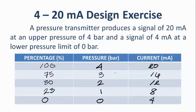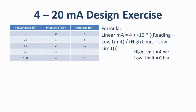There is a more efficient and accurate way to do this using a formula. For a linear response, the formula is: mA = 4 + 16 × (reading − low limit) / (high limit − low limit). In our case, the high limit is 4 bar and the low limit is 0 bar.